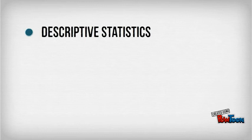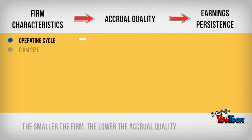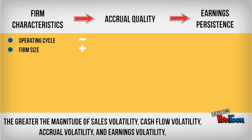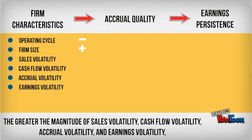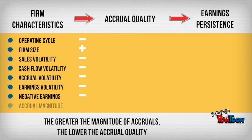Using descriptive statistics, Pearson correlation, and regression analysis, they came to the following conclusions. It turns out that the longer the operating cycle, the lower the accrual quality. The smaller the firm, the lower the accrual quality. The greater the magnitude of sales volatility, cash flow volatility, accrual volatility, and earnings volatility, the lower the accrual quality. The greater the frequency of reporting negative earnings, the lower the accrual quality. And lastly, the greater the magnitude of accruals, the lower the accrual quality will be.